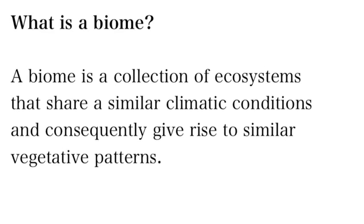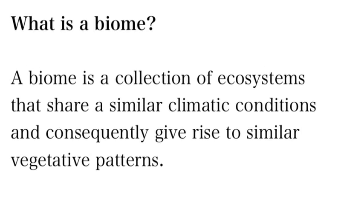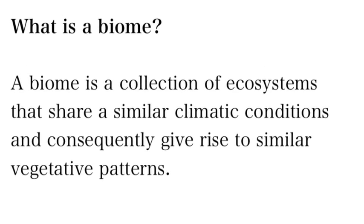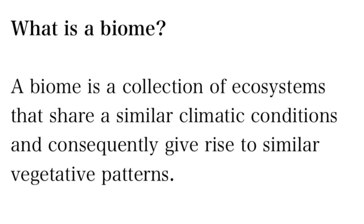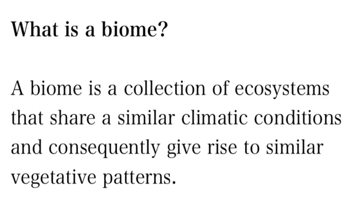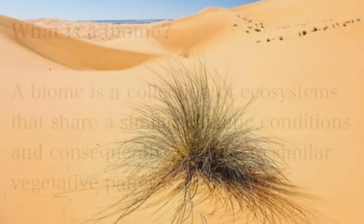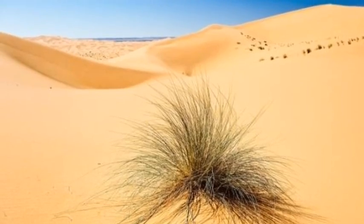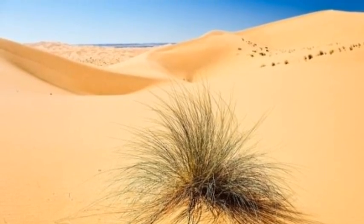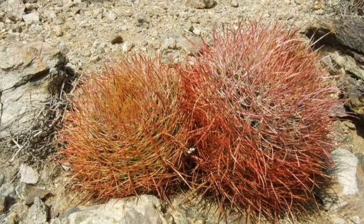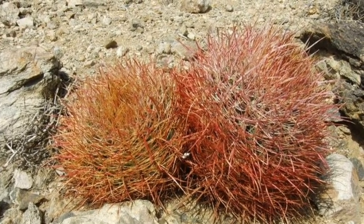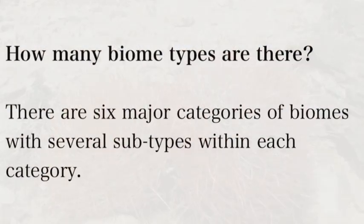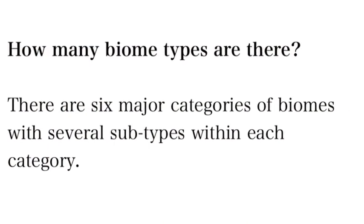A biome is really just a collection of similar ecosystems. And what defines an ecosystem? Mostly climate. So it's similar climates, and that climate will actually dictate specific kinds of plants and plant patterns. So you've got this wispy kind of plant in this desert, but in a different desert, a different part of the world, we still have these wispy kinds of plants. You see that with forests and everything.